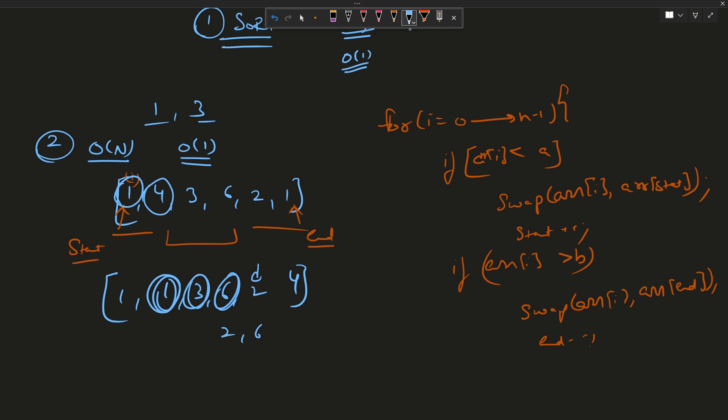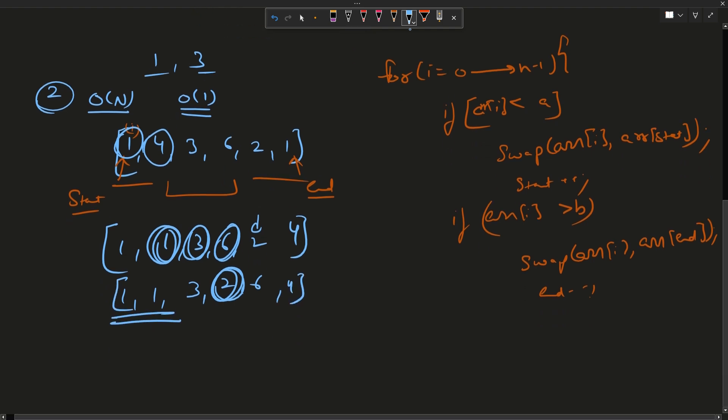After this, one - less than one? No. Three - greater than three? No. Six - greater than three? Yes. So I shift - my end is now here. I shift two with six. My i will move here. Is two less than one? No. Two greater than three? No. So my array will look something like [1, 1, 3, 2, 6, 4] and this is also a valid combination. The question says you can provide any valid combination, it doesn't require a sorted array.